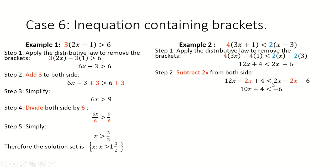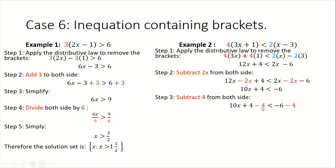Now we group the constant on the right. We have a plus 4 on the left, so in order to transfer this plus 4 to the right, we do the opposite of adding 4, which is to subtract 4 from both sides. We state this as 10x plus 4 minus 4 less than negative 6 minus 4. When we simplify, 4 minus 4 is 0, so we have 10x, and negative 6 minus 4 gives us negative 10.